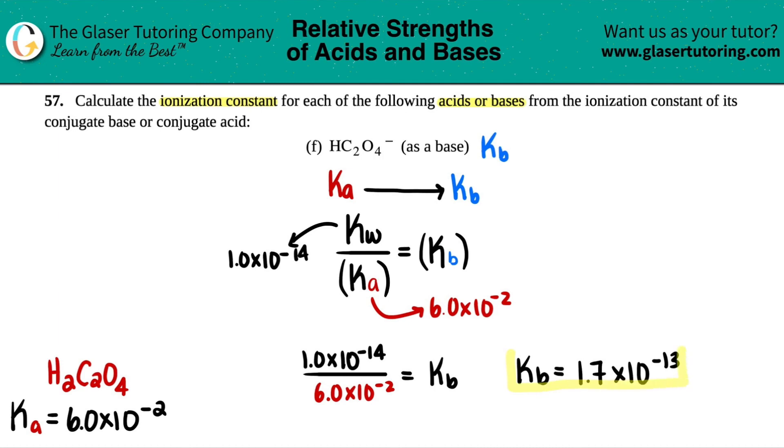And that's it. Kb values and Ka values do not have units. They are unitless, no units. So just give the number. And that's it.